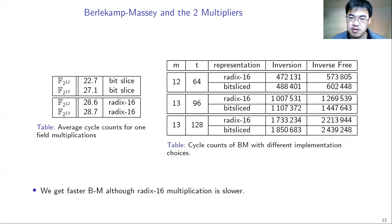Then we show our result of Berlekamp-Massey algorithm with the various settings in these tables. This is because we didn't know which combination will be faster. We tried every setting to find out the fastest implementation. On the left table, you can see that the bit-slice multiplication is actually faster than the red-existing multiplication. But on the right-hand side, we have the opposite result. The Berlekamp-Massey with the red-existing multiplication is faster than the one with the bit-slice multiplication. And the other result is that Berlekamp-Massey with the inversion is indeed faster than the inversion-free version.